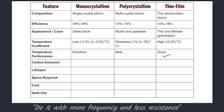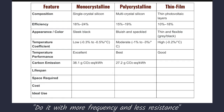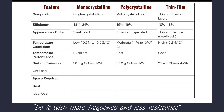The next feature is carbon emission. Mono-crystalline solar panels have the highest carbon emission at 38.1. Poly-crystalline is slightly lesser at 27.2. Thin-Film has the lowest carbon emission at 21.4, which is lesser than both Mono-crystalline and Poly-crystalline.